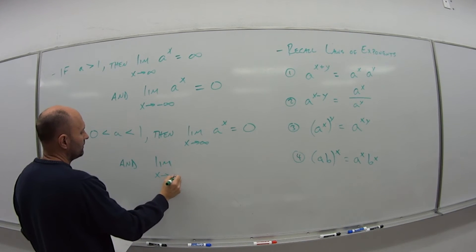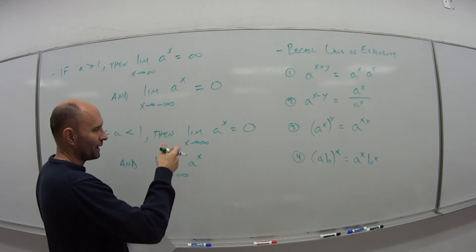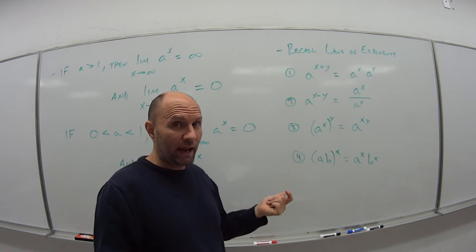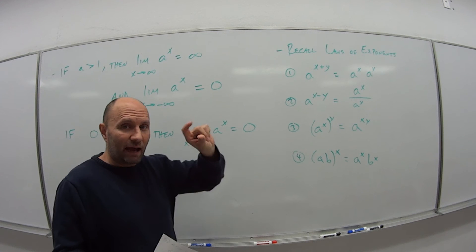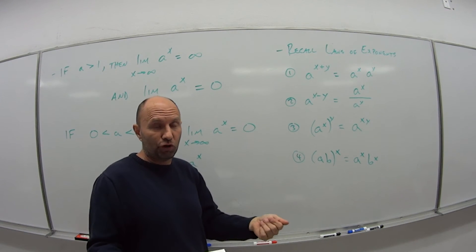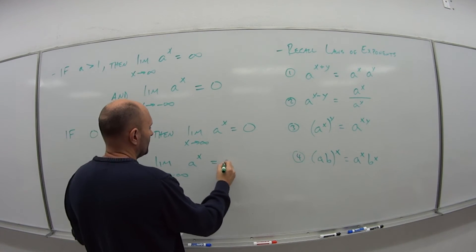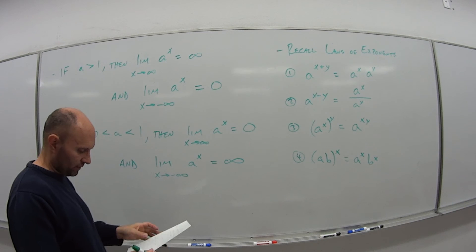And the reverse happens here. So the limit as x goes to negative infinity of a to the x. So again, because it's negative, so if we had 1 half as our value for a, I have to take the reciprocal. So that now becomes the reciprocal of a half, which is 2. So 2 to the infinity power blows up on us. So this goes to positive infinity.